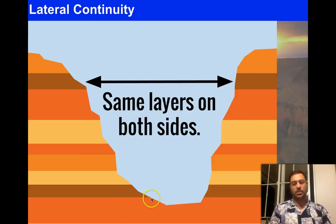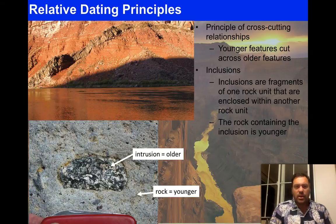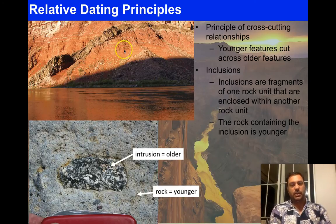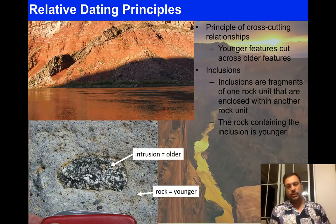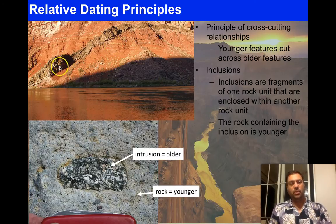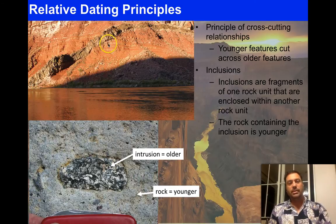Cross-cutting relationships are really neat in geology. This is where something young cuts across an older feature. Here we see rock layers and cutting across them is a dike — the dike is not following the rock layers, it cuts across them. The question is: what is older? The rock layers are clearly older; the dike has been intruded and is younger. You are intruding something that is cross-cutting something that is flat. The flat layers came first; the dike came in much later.